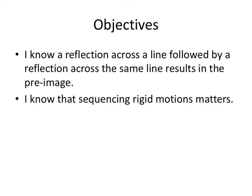All right, take a moment and write these two objectives down for this lesson. I'll just read them. I know a reflection across a line, followed by a reflection across the same line, results in the pre-image. And the second one, I know that sequencing rigid motions matters.